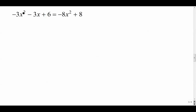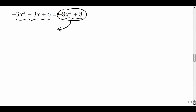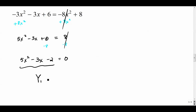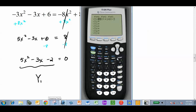The next equation is not in the right format yet. We need all terms on one side. There are three terms on the left and two on the right, so we move the right-side terms over by doing their opposites. Add 8x² to both sides — those cancel — giving 5x² - 3x + 6 = 8. Then subtract 8 from both sides: 5x² - 3x - 2 = 0. That's ready to enter into Y₁.